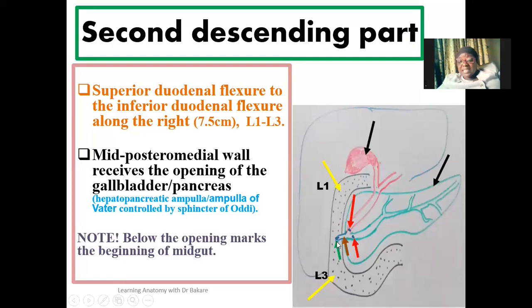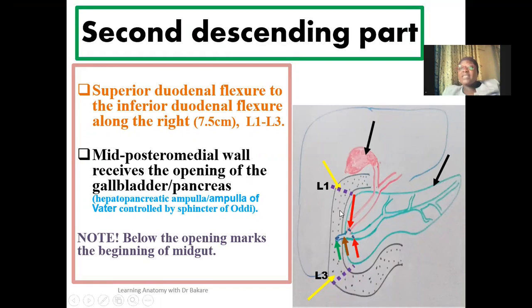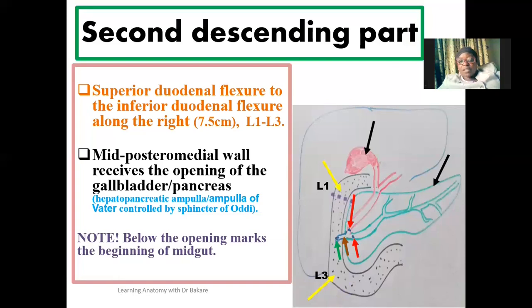Below this opening is where we have the beginning of the mid-gut. The GI tract is divided into the foregut, mid-gut, and hindgut. From the oral cavity through the esophagus and stomach, up to the superior half of the second descending part of the duodenum, is the foregut. The inferior half of the second descending part of the duodenum, along with the horizontal and ascending parts, is the mid-gut. So the duodenum spans both the foregut and the mid-gut.